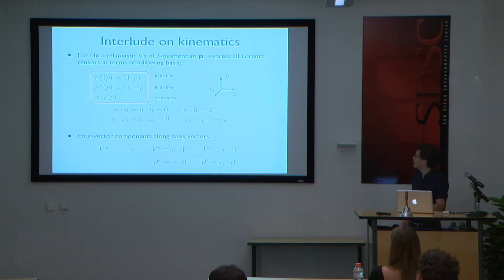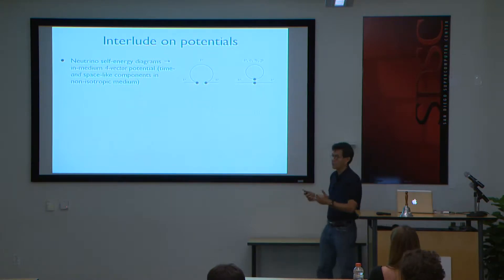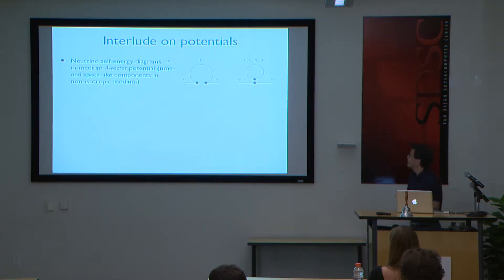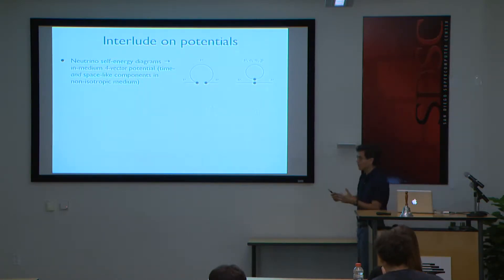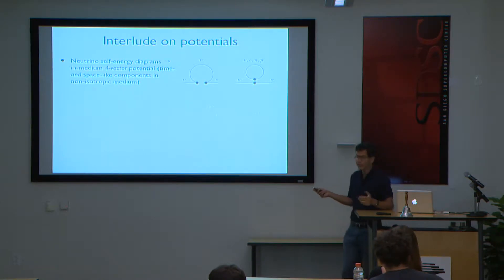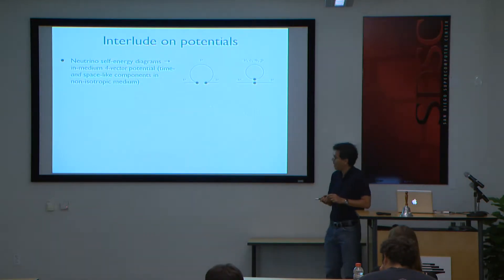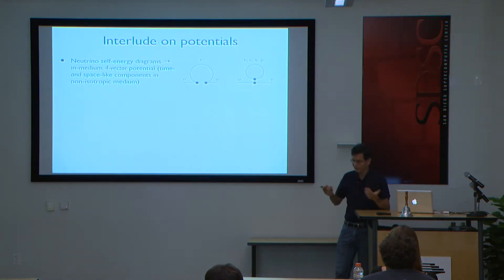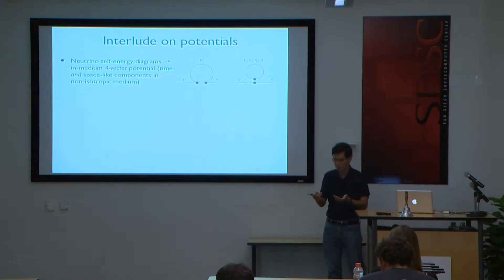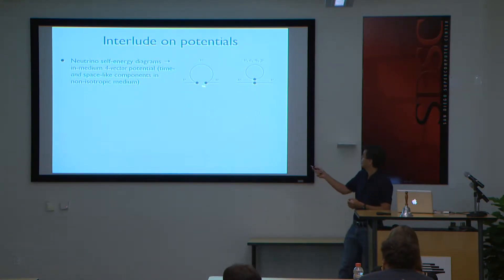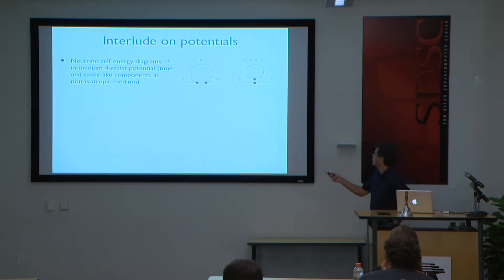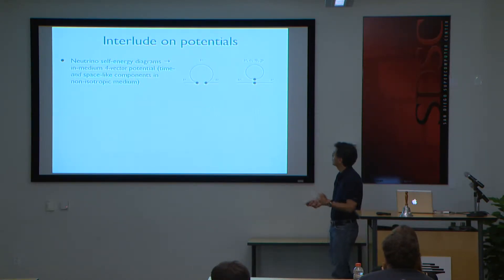Now a little more on the potentials. Baha introduced these already, calling them H-nu-nu or H-nu-e. In the field theoretic framework, the way to obtain this potential is by computing a few Feynman diagrams. You compute how the propagation of neutrinos in the system is modified — you write the two-point function and see how it's modified by the fact that the neutrino can interact with itself and with the electron, neutron, and proton. There's nothing arbitrary: you look at the standard model and ask what the interaction of neutrinos with themselves and matter fields is.